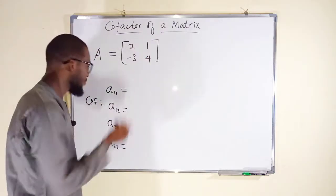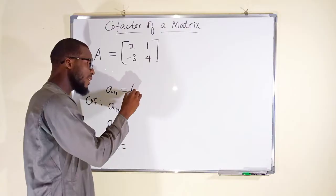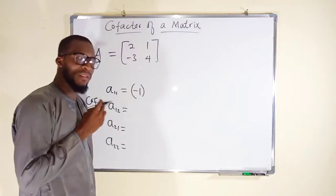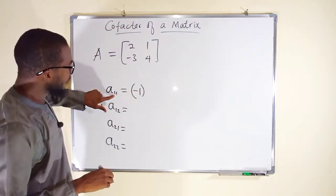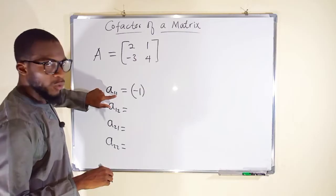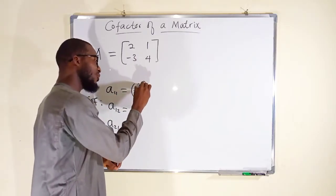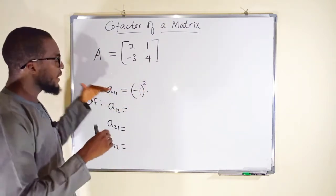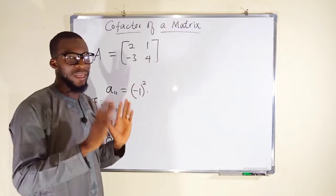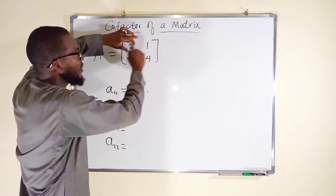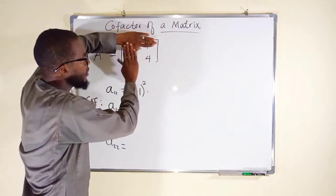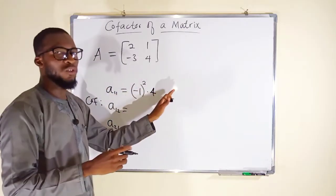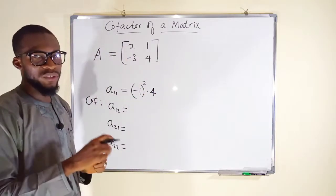We take negative 1 raised to the power of the sum of the column and the row of that element. For the first row, first column element, one plus one equals two. Then we multiply by the minor. To obtain the minor, we delete the row and the column of that element, leaving only 4. So the cofactor A11 equals positive 1 times 4, which is 4.